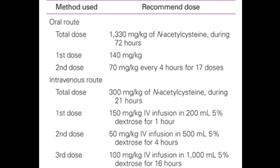The N-acetylcysteine dosage for adults: there are two protocols — IV or oral. The IV protocol is a 21-hour protocol. The starting dose is 150 mg per kg given over 1 hour in 200 ml of dextrose 5%, followed by 50 mg per kg given over 4 hours in 500 ml dextrose 5%, followed by 100 mg per kg given over 16 hours in 1 litre of dextrose 5%.